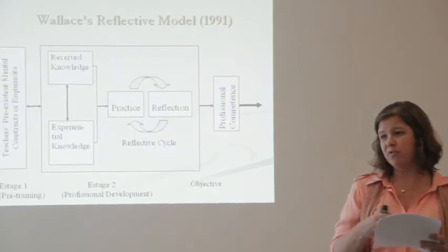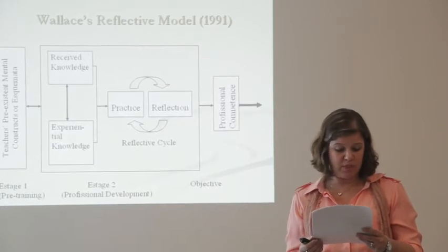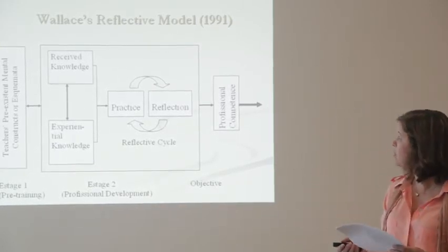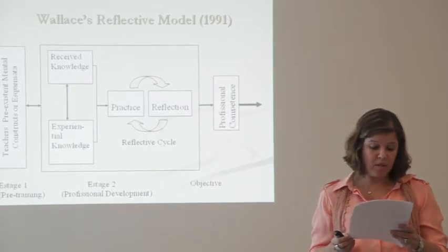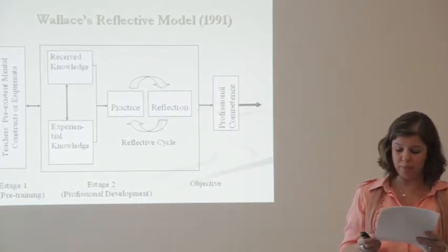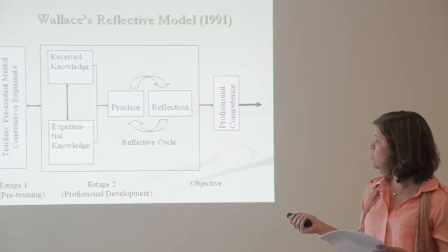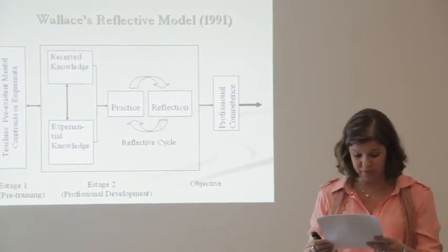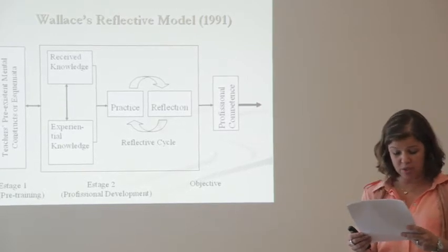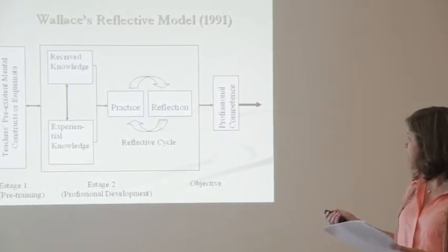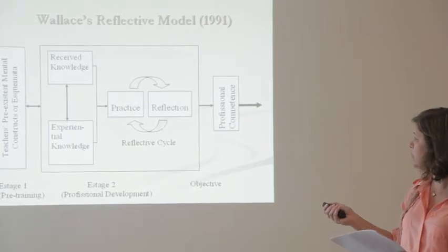At the time of my MA research, before 2000, one of the most famous models for teacher education was Wallace's reflective model. He based his ideas on Schön, 1983. So, Wallace suggests that teacher education has two main components: received knowledge and experiential knowledge. Wallace says that development implies change, and fruitful change is extremely difficult without reflection. That's why he has this reflective cycle — practice feeds into reflection, and reflection feeds back into practice.